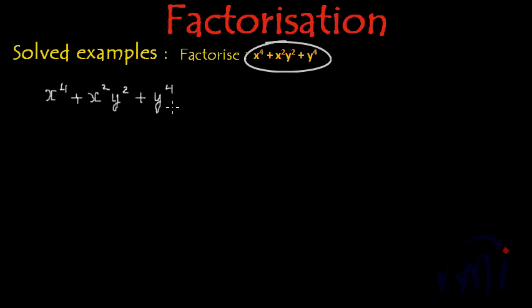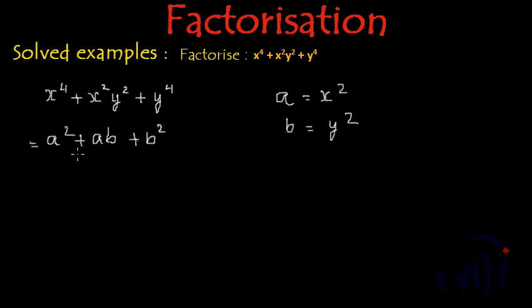So if I assume a is equal to x square and b is equal to y square, this can be written as a square plus ab plus b square.